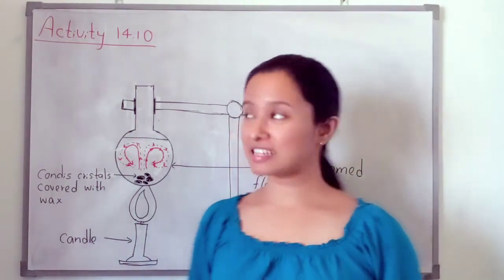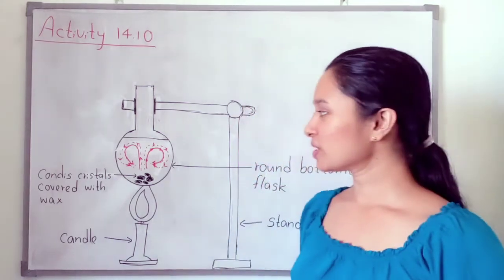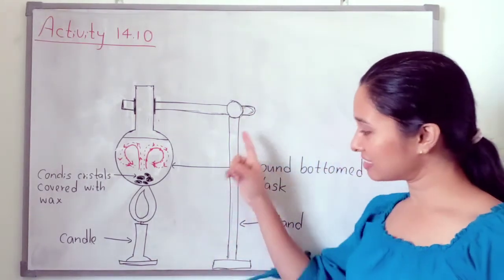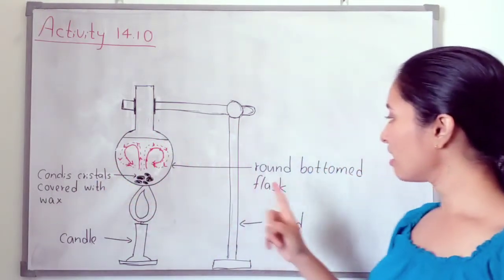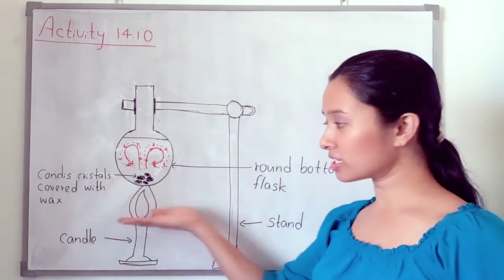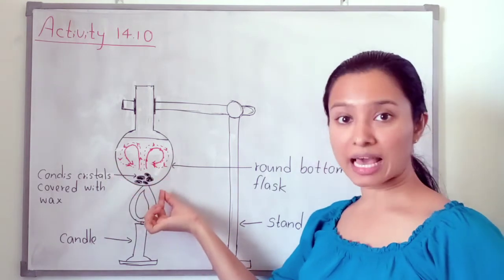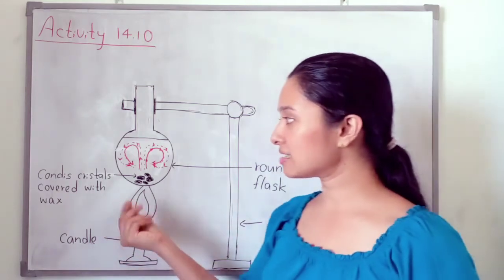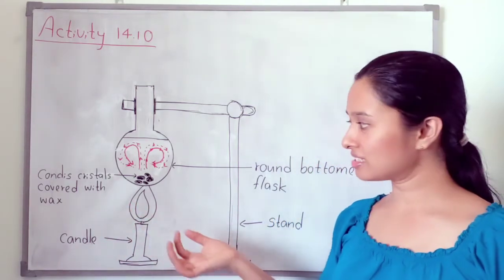We are going to discuss Activity 14.10. Here we need a laboratory stand. This is a laboratory stand. And we need a round-bottomed flask — this is a flask where the bottom has been rounded. Then we need some condis crystals. Do you know what condis crystals are? These are condis crystals.